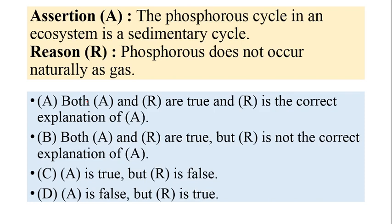What is the reason? The reason states: phosphorus does not occur naturally as a gas. This is true — phosphorus does not occur naturally as a gas — but is the reason explaining the assertion? No, the reason is not explaining the assertion. So here the answer would be: both assertion and reason are true, but the reason is not the correct explanation of the assertion.